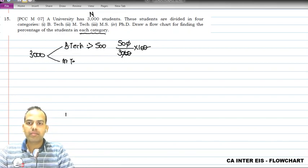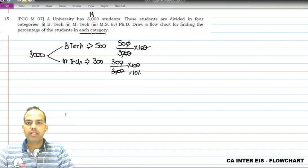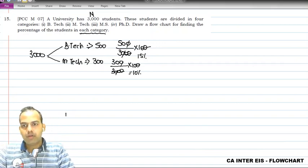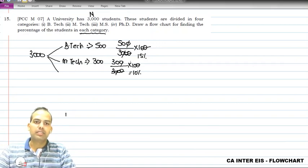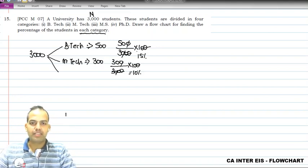Similarly, for M.Tech, if there are 300 students, the percentage is 300 divided by 3000 into 100, which comes to around 10 percent. Likewise we calculate the percentage for MS and PhD categories. It looks like a tricky sum but it is not actually tricky - you can understand it very well.